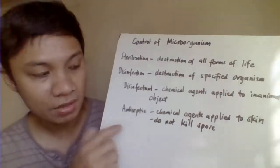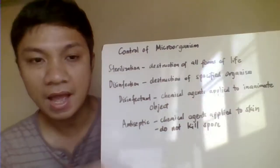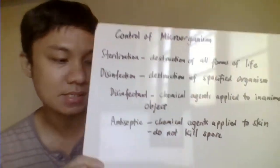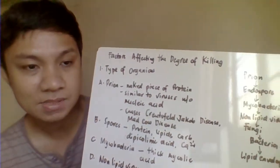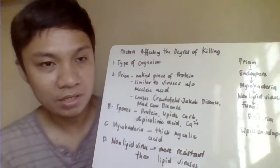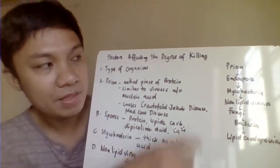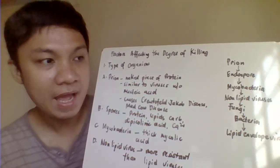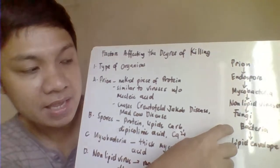Antiseptics also cannot kill endospores, which are considered the highest form of microorganism in terms of resistance to the killing process. The different microorganism forms are arranged from most resistant to most susceptible: prion, endospore, mycobacteria, non-enveloped non-lipid viruses, fungi, bacteria, and finally lipid-enveloped viruses.